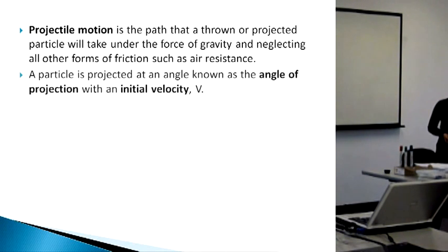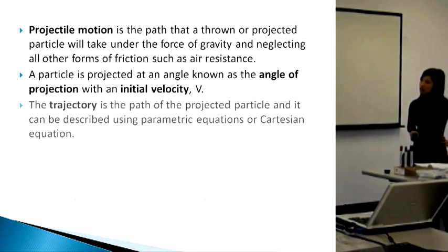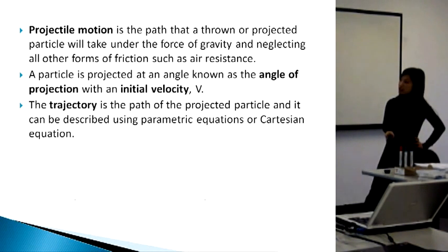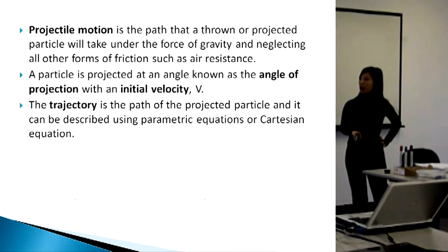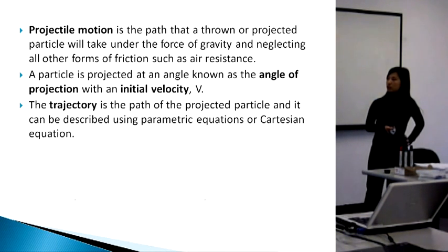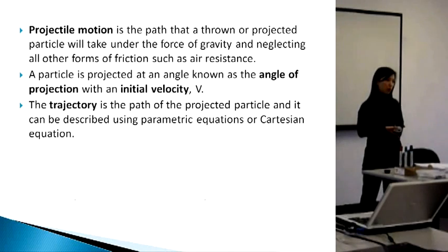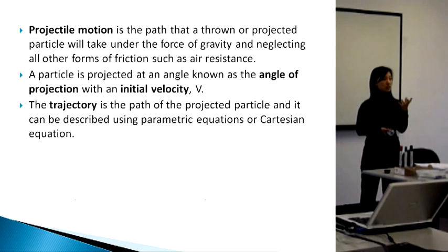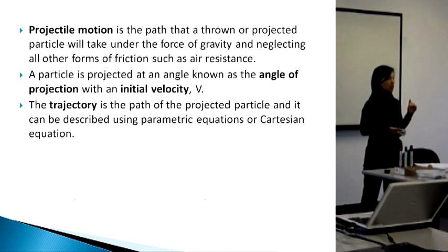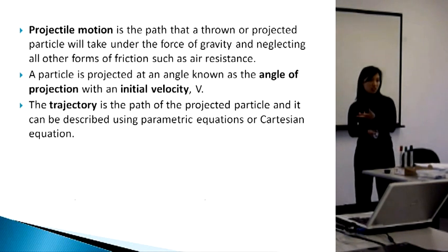A particle is projected at an angle — known as the angle of projection — with the initial velocity of V. The trajectory is the path of the projected particle and it can be described using a parametric equation or a Cartesian equation. We will look at both of these equations. We actually start with the parametric equations and then use that to find the Cartesian equation.